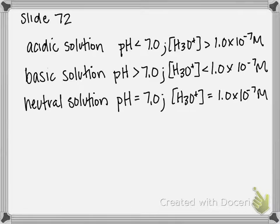Anything that is basic is above 7, from even 7.01 to pH of 14. So that corresponds to having a hydronium concentration less than 1×10^-7 molar. And anything that's neutral has a pH of exactly 7, which corresponds to having a hydronium concentration of 1×10^-7 molar.